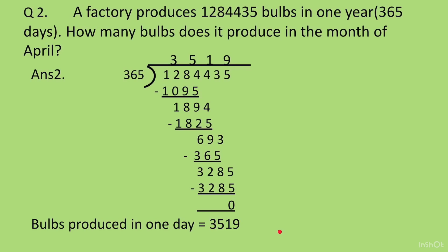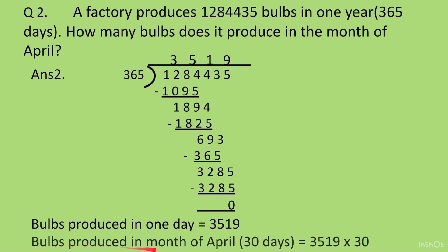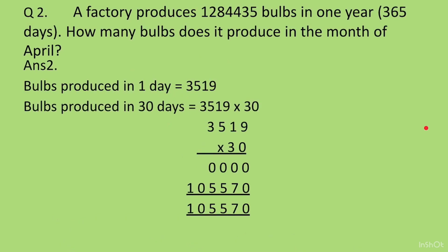Now we know the number of bulbs produced in 1 day. We have to find out the bulbs produced in the month of April. April has 30 days, so we multiply 3519 by 30. When you multiply by 30, you get the answer as 105570. Answer: 105570 bulbs.